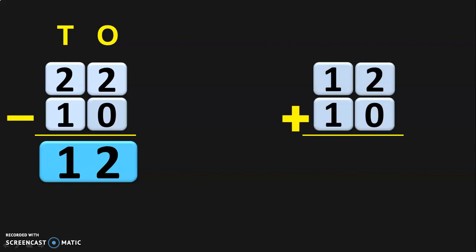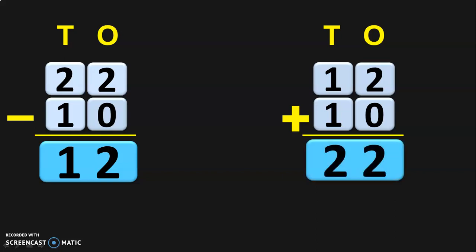With the answer that you get, you add the smaller number. The answer here is 12 and the smaller number is 10. When you add these two, you will get the bigger number from which you started the subtraction. So here it is 12 plus 10. Write down the place values and begin the addition from the ones place. Two plus zero is two and in the tens place, one plus one gives you two. So addition of twelve plus ten gives you twenty-two, which is the bigger number you started with. With this, you can conclude that the subtraction you have done is correct.